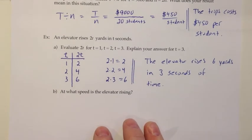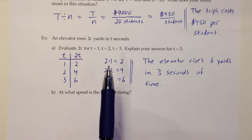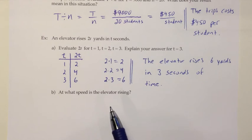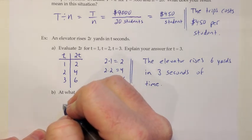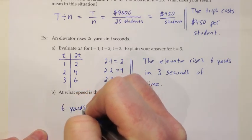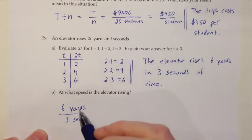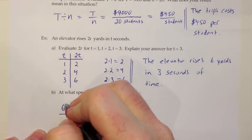Finally, they want to know at what speed is the elevator rising. When I think about a speed, I think about the speed of a car, and there I would do something like miles per hour. Sometimes with objects that are moving slower, they do feet per second. In this case, it looks like they're using yards. So I want to talk about how many yards is this moving over how many seconds. The elevator is rising 6 yards in 3 seconds. So I could say that's 6 yards divided by 3 seconds.